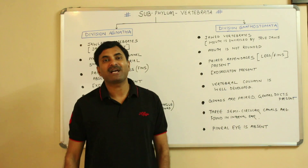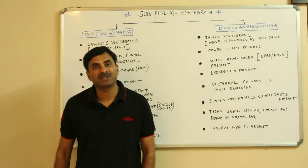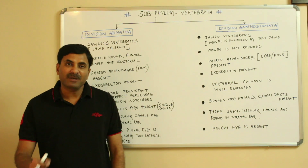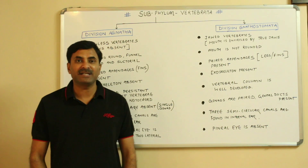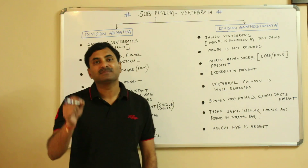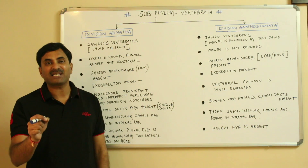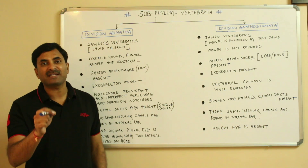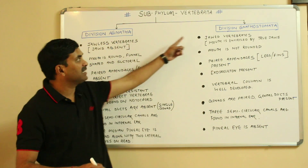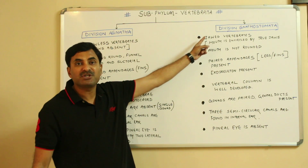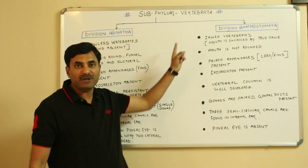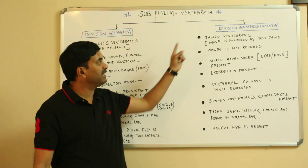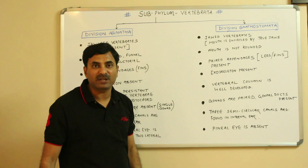Welcome to all. Today we are discussing the classification of the subphylum Vertebrata. In the previous video, you studied that subphylum Vertebrata is classified into two divisions: one is known as division Agnatha and another is known as division Gnathostomata. Today we will be differentiating between division Agnatha and division Gnathostomata.